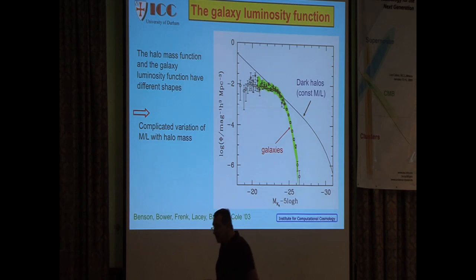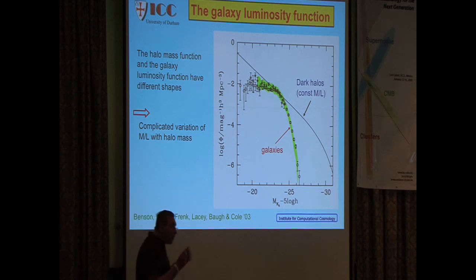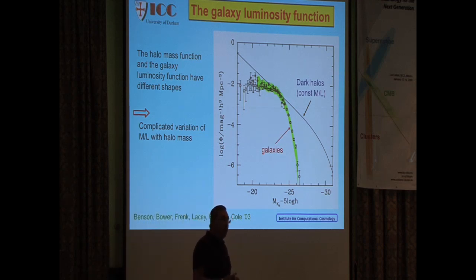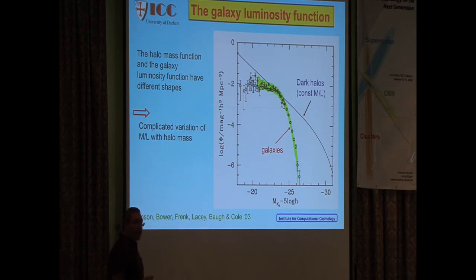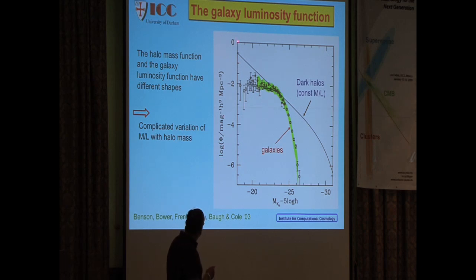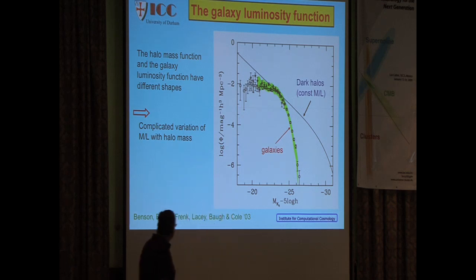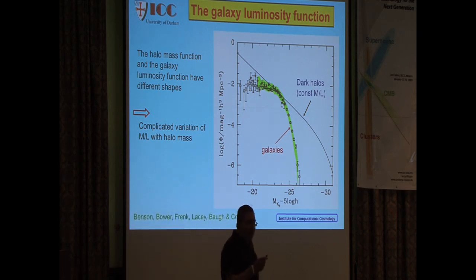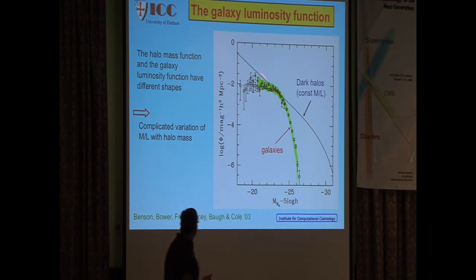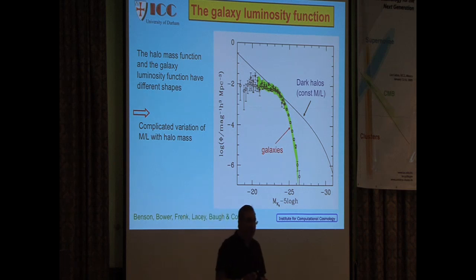Galaxy formation is complex. If you naively thought that light would be placed in halos in proportion to the mass of the halo, you would get completely the wrong answer, because the halo mass function — the number of halos as a function of mass — has a very different shape from the observed number of galaxies as a function of luminosity. A theory of galaxy formation can be expressed as a mapping of one function onto the other, and the operator in this case is astrophysics.